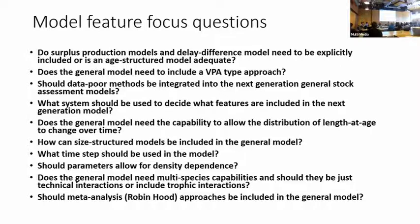One thing heard in the discussion was: what do we want in current models that we can't put in without rewriting the code? It was brought up that random effects and changing over to TMB would make things more efficient. What else is there? Is the capability of doing tagging-type analysis good enough in current models, or do we have to rewrite the code to make it more efficient?